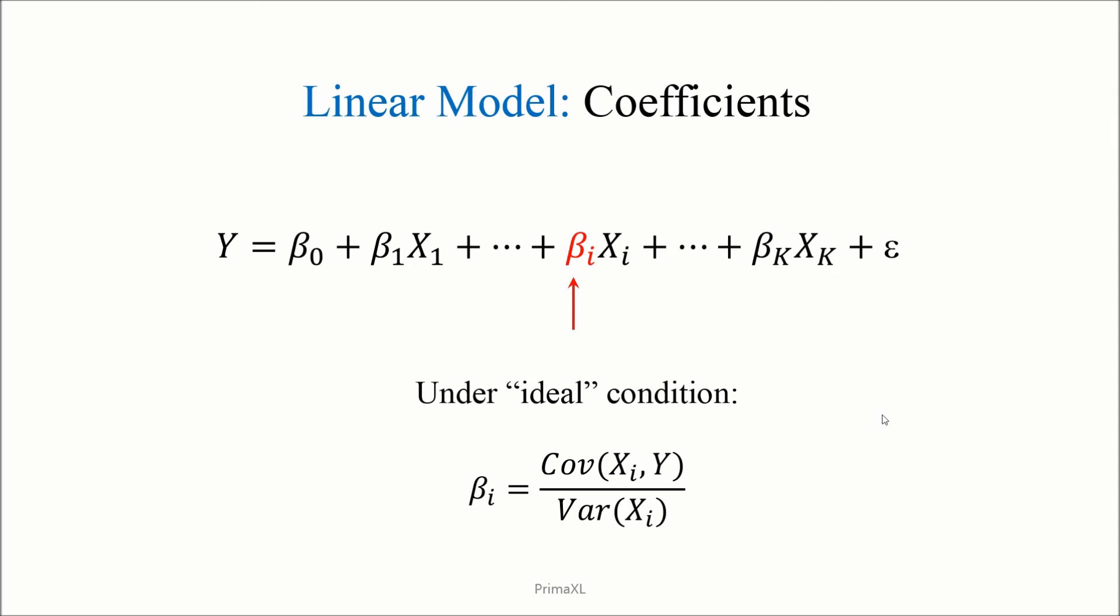Please notice that in the numerator, we have the covariance between the xi and y. And in the denominator, we have the variance of the xi. Generally, we cannot assume this ideal condition, so this simple expression may not be always valid.